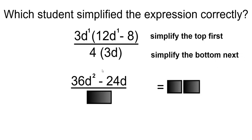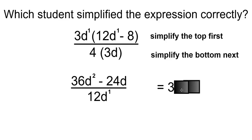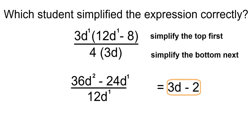Simplify the bottom next. 4 times 3 is 12, so that will be 12D. 36 divided by 12 will be 3. And D to the 2 divided by D to the 1 means you subtract the exponents, so that will be D to the 1, which is just D. Minus 24 divided by 12 is 2. And D to the 1 divided by D to the 1 means you subtract the exponents, so D to the 0 means the D will no longer be there. So the answer will be 3D minus 2.